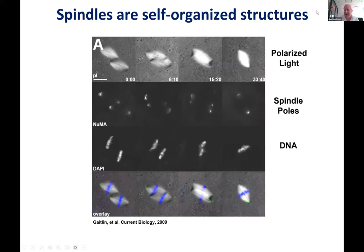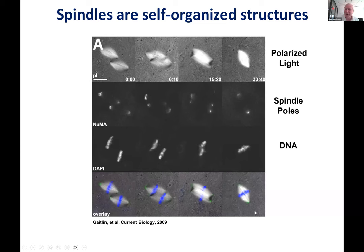Another illustration of spindle self-organization: in these extracts with DNA, you can have multiple spindles floating around. If you take two spindles and push them together, they fuse and form one spindle, which to a first approximation is the same size and shape as either of the original ones. So this is really a self-organizing system.